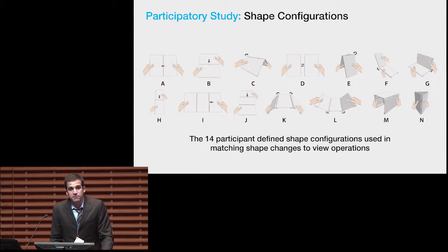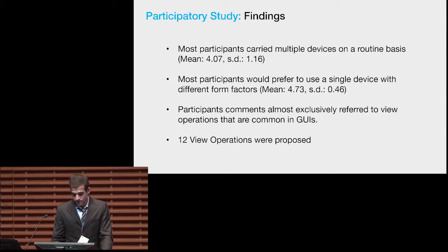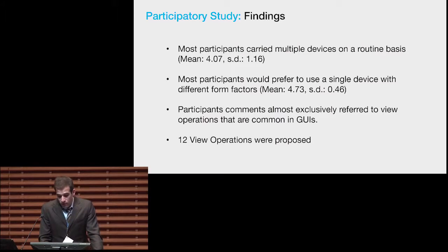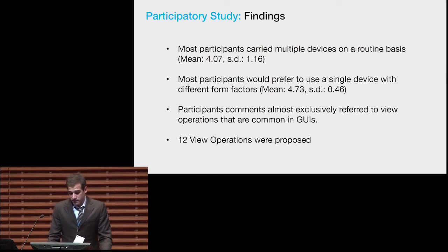This image shows the 14 shapes derived from our participatory design session. For each shape, we asked participants to propose an associated functionality. Our findings show that most participants routinely carried multiple devices such as smartphones, tablets, and laptops. However, they preferred to use a single device that could be shaped into various form factors. When asked what functionality the proposed shape changes might have, participants almost exclusively referred to view operations common in graphical user interfaces, and 12 view operations were proposed.